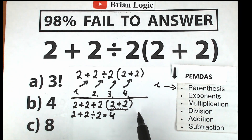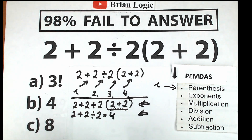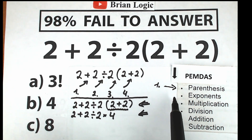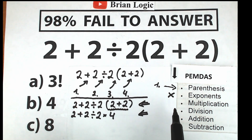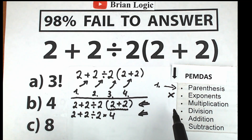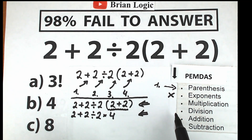After evaluating the parentheses, we move to the next step. The second step in PEMDAS is exponents — but we don't have any powers, squares, or cubes, so we skip that. Next is the Multiplication and Division group, and this is the trickiest moment because many students are confused: some think we should multiply first, others think we should divide first, which leads to a big argument.